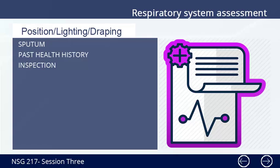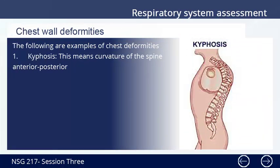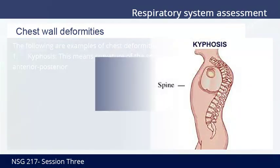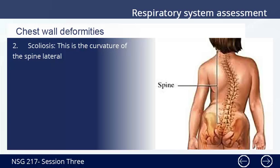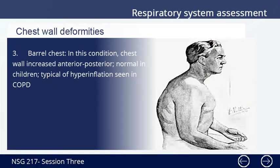During inspection, tracheal deviation can suggest tension pneumothorax. Examples of chest wall deformities include: Number 1 — kyphosis, which means curvature of the spine in the anterior-posterior direction. Number 2 — scoliosis, which is lateral curvature of the spine. Number 3 — barrel chest, a condition where the chest wall has increased anterior-posterior diameter; it is normal in children but is typical of hyperinflation seen in COPD.